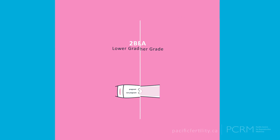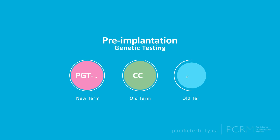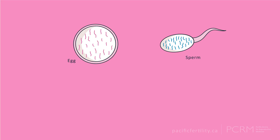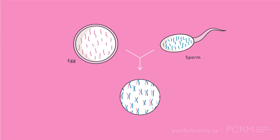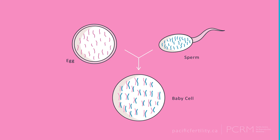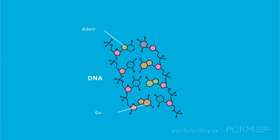Another way to select between embryos is through pre-implantation genetic testing. In order to make a typical baby, an embryo must be created from an equal amount of genetic material contributed by the sperm and the egg. We are all made up of a unique set of DNA, which we inherit from our genetic parents.